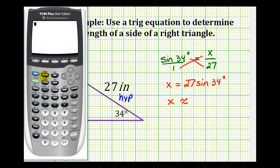now go back to the home screen, second, quit, and type in 27 times sine 34 degrees. X is approximately 15.1 inches.